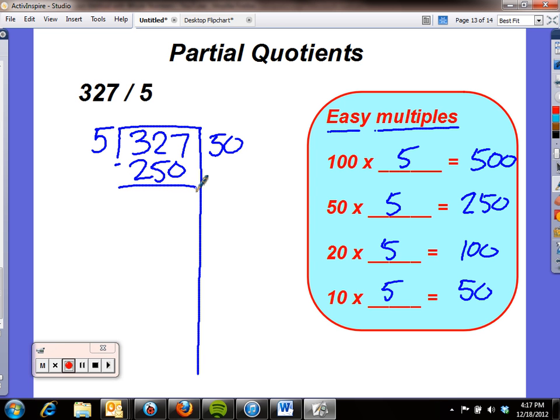I subtract that, because now I'm going to have part of my dividend left over. 7 minus 0 is 7. I can't do 2 minus 5, so I borrow from the 3. 12 minus 5 is 7. I have 77 left.